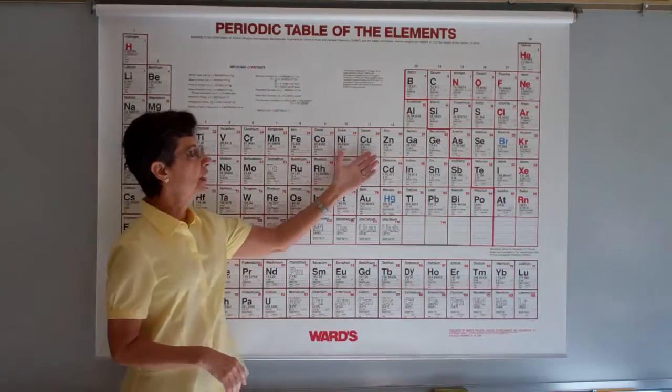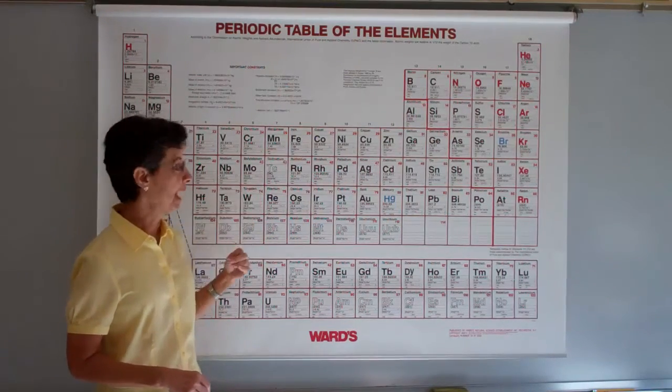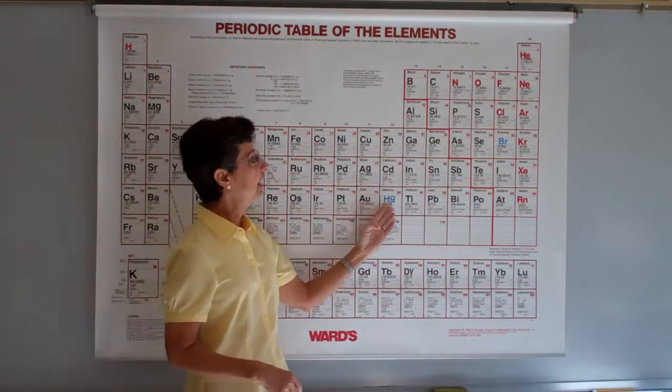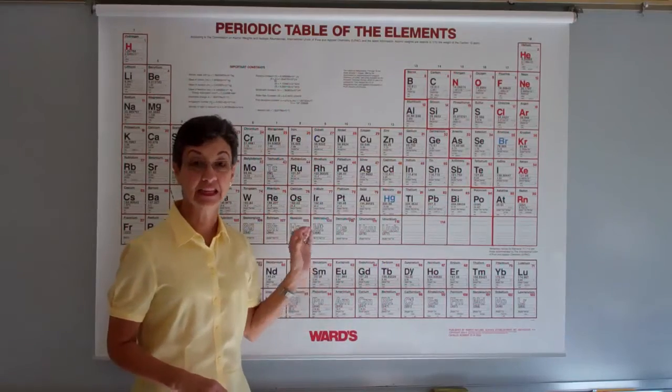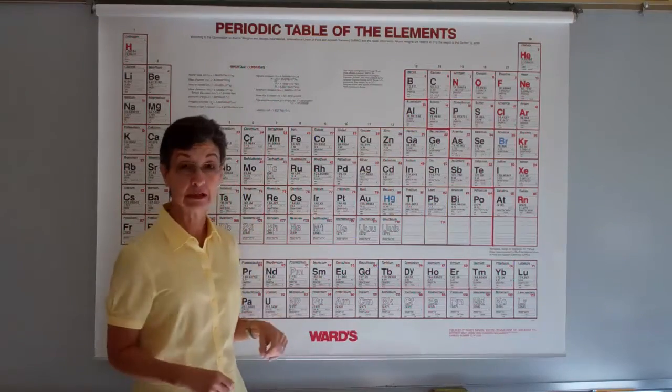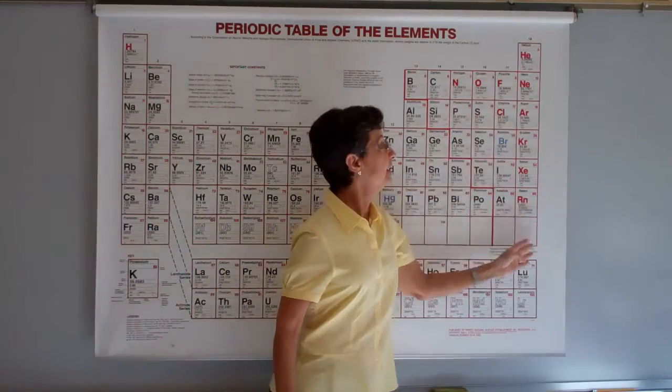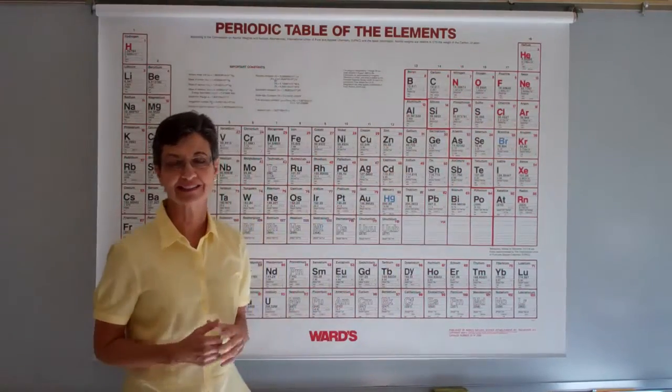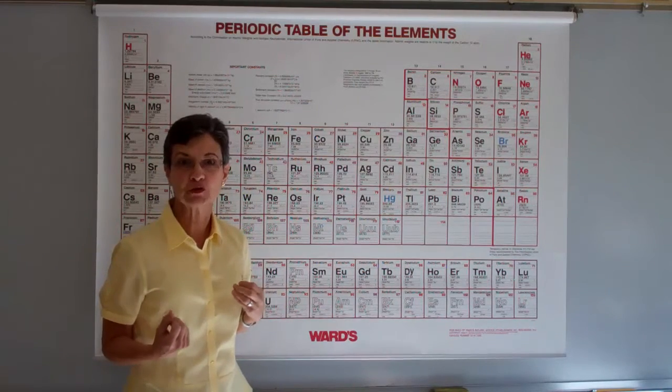The black elements or the letters that are in black represent the solids. These two that are in blue represent the liquids, the only liquids in the element form. And these red ones are gases. So, that's what those colors represent.